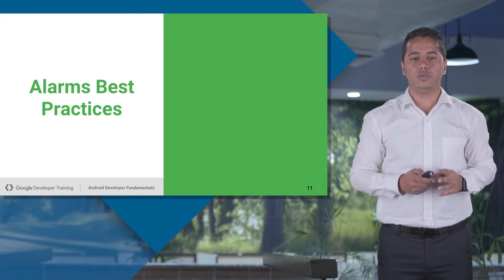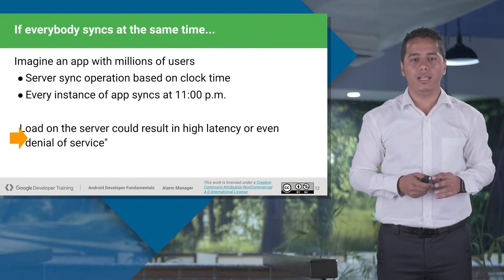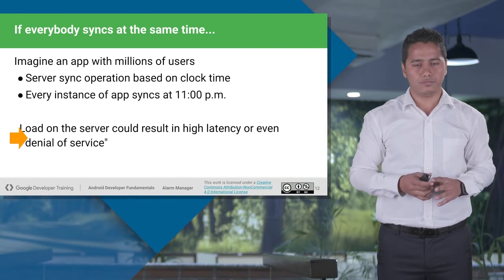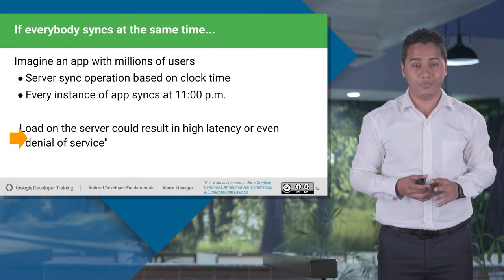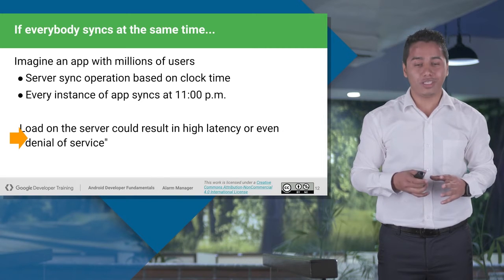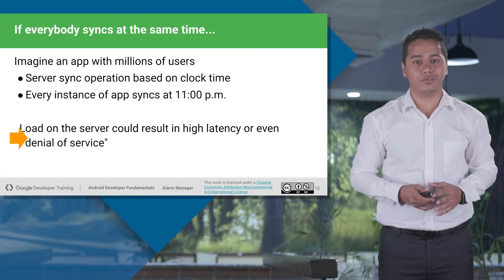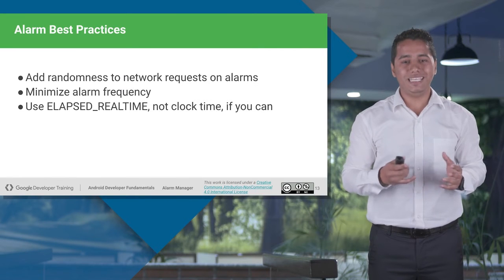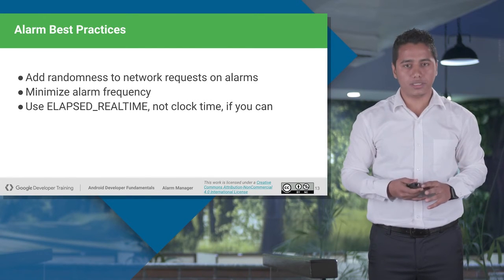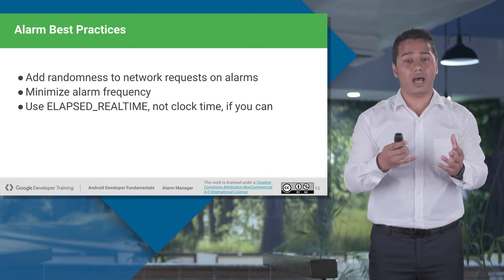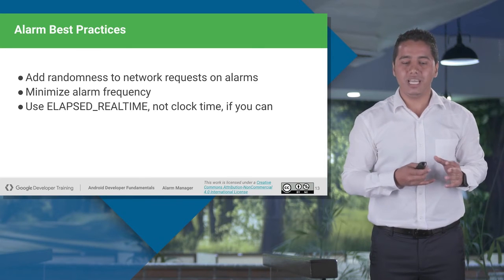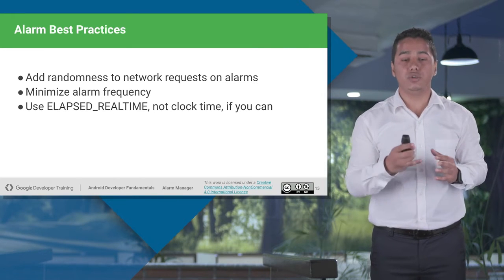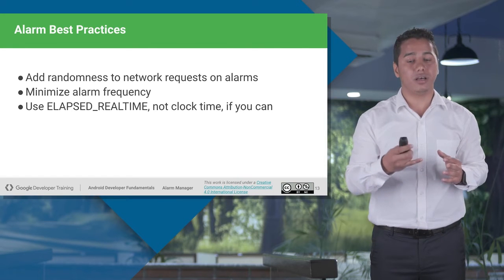Let's talk about best practices used in alarms. Let's take a small analogy. Imagine that we have an app with millions of users and they all sync together at 11 p.m. What will happen at that point? My server will get millions of requests and this might crash my server. This problem could have been easily solved by randomizing the network requests, and alarms are perfectly capable of doing that. While using alarms, we have to make sure we are minimizing the alarm frequency so that it doesn't drain your battery, network status, or resources.